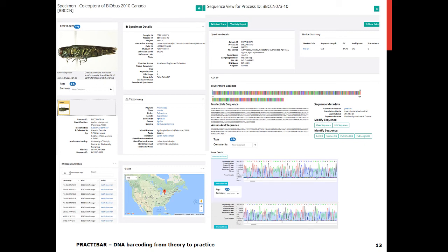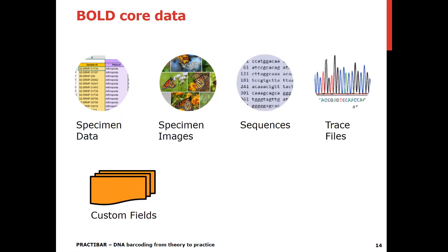There is a direct link to GenBank through the accession number, and the sequence page also offers the possibility to access the BOLD ID engine directly from there. To summarize, there are four types of files to be uploaded to BOLD: specimen data as spreadsheet, images as JPEG, sequences as FASTA files, and traces as ABI files. Currently, BOLD allows data for about 50 fields, but if this is not enough, users can opt to insert custom fields into their projects, such as regulatory interest or anything else that seems fit.